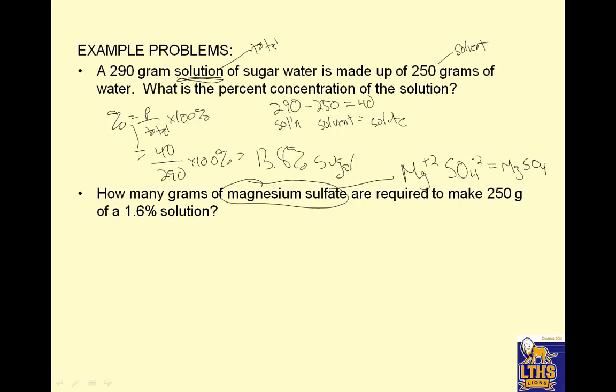Remember percent is part over total times 100%. And what I like to do if I'm given the percent is I just put it in the decimal form and get rid of this. So I make it .016. That gets rid of that. Equals the part. So how many grams of magnesium sulfate? That's what I'm looking for, that's the part. I'm required to make 250 grams of solution, that's my total. So to solve for this, I would take P equals .016 times 250. And when I put that in my calculator, I get 4.00 grams MgSO4.